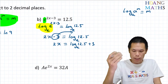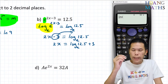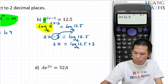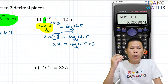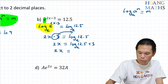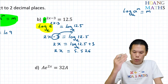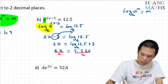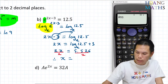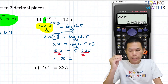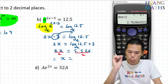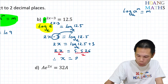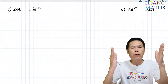It doesn't matter whether you divide by 2 first or not — we get the same answer. So I go ln (that's log base e) of 12.5, in brackets, plus 3: that gives 5.526. So 2x equals 5.526. I divide by 2 on both sides: x equals answer divided by 2, so 2.7628. Correct to two decimal places: the number after six is two, less than five, so the answer is x equals 2.76.